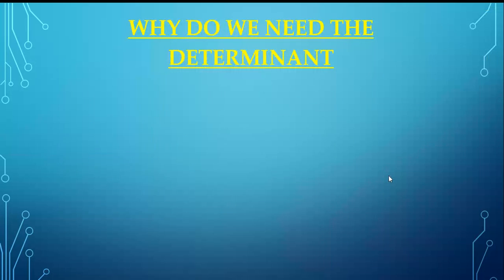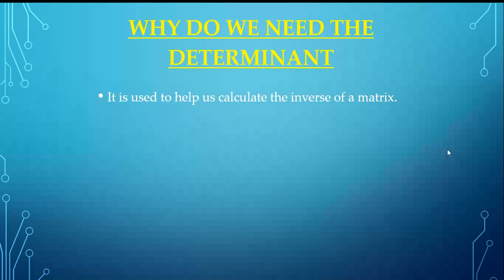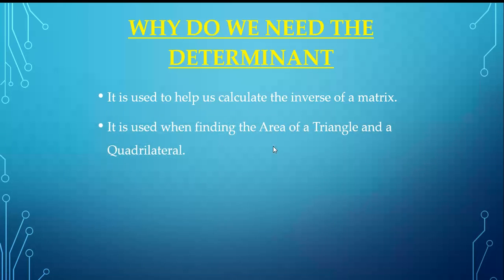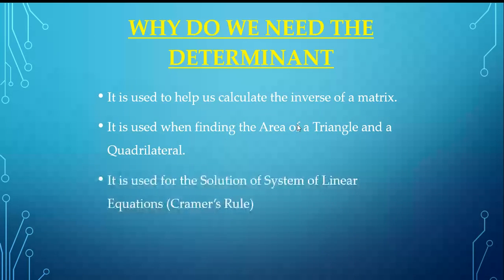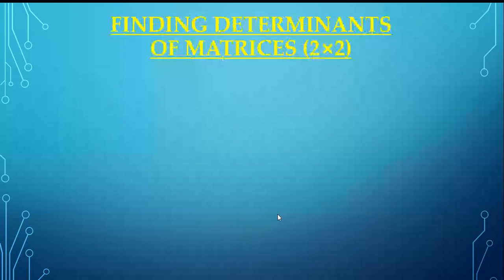Why do we use determinants? First, the determinant is used to calculate the inverse of a matrix. Second, we use it to find the area of a triangle or quadrilateral. Third, we can solve systems of linear equations using the determinant — that rule is called Cramer's rule, which we will study further.